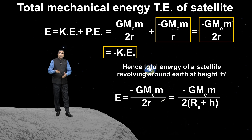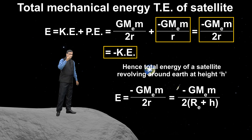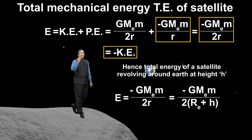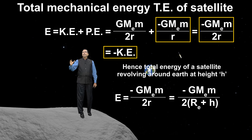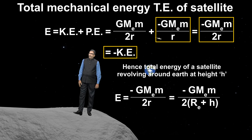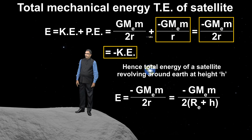The total energy of a satellite revolving around the Earth at height h is equal to E = minus G Mₑ m upon 2r, which equals minus G Mₑ m upon 2 into (rₑ + h). Remember, this formula applies when we have considered the potential energy to be zero at infinity.